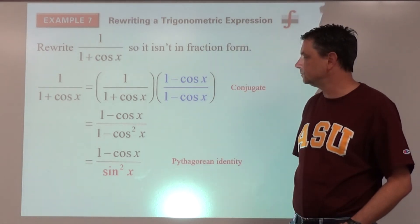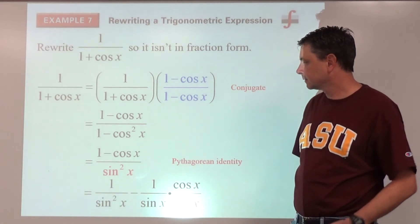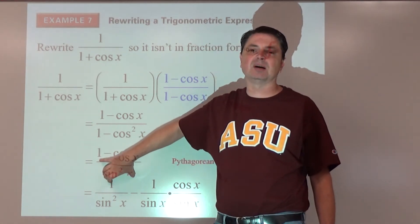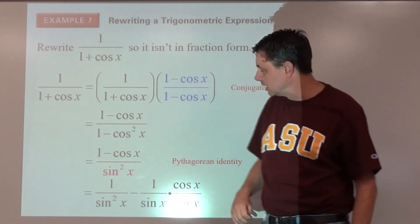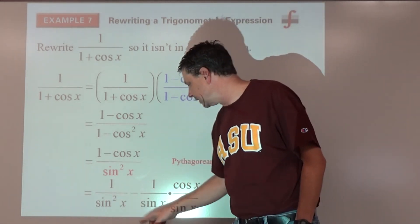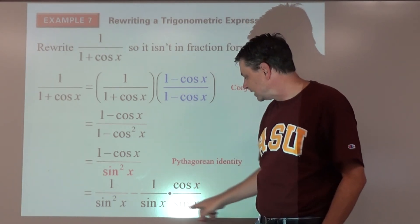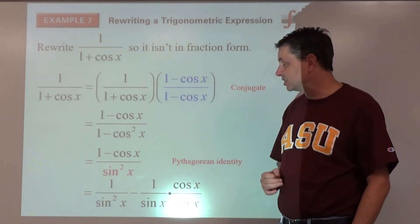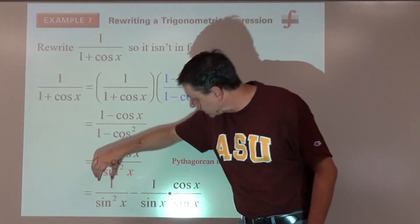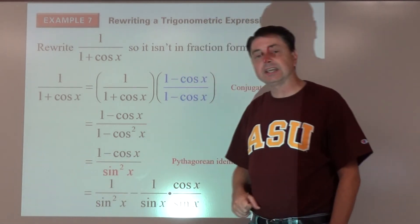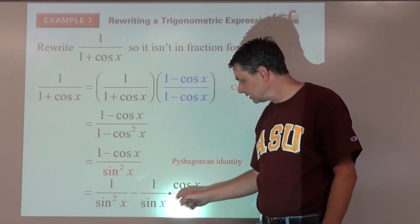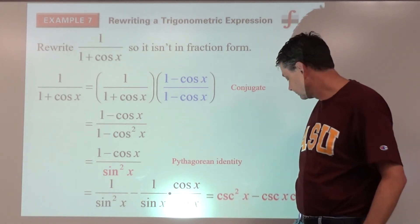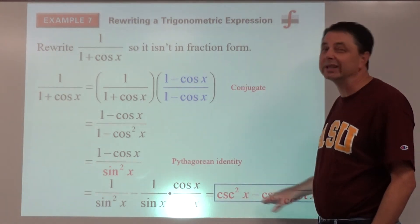We can distribute the division since we have a monomial denominator — noting this does not work in reverse with a binomial denominator. Splitting up sine squared x gives one over sine squared x minus cosine x over sine squared x. These become secant squared x minus secant x times cotangent x by the quotient identity. That's one valid answer.